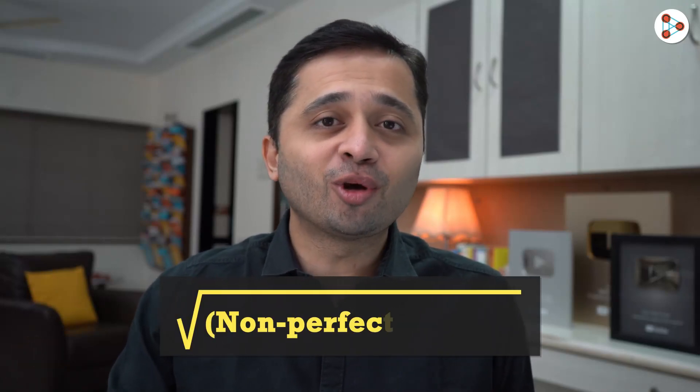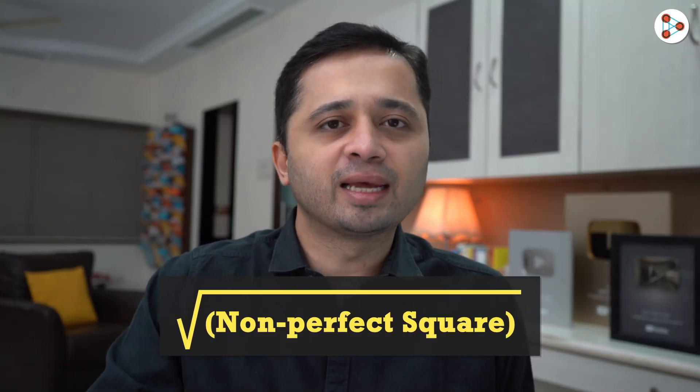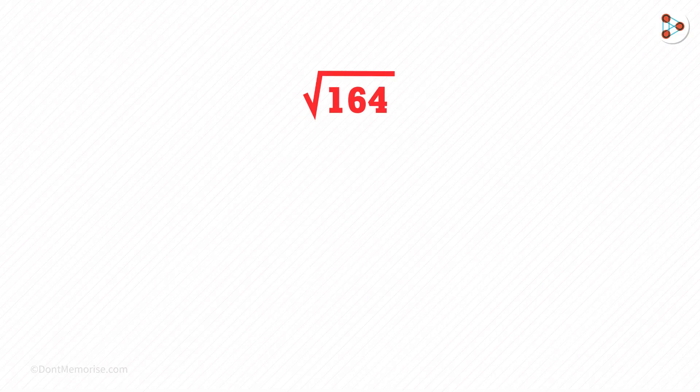How do we calculate the square root of any non-perfect square? Let's see another example. What's the square root of 164?